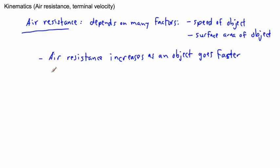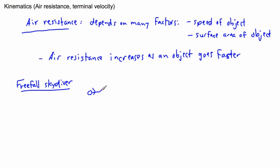Let's look at an example: a free fall skydiver. If you jump out of a plane in a real situation — so here we are considering air resistance, we're not going to neglect it — you're falling through the air. Let's look at what really happens with your speed versus time.